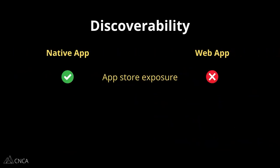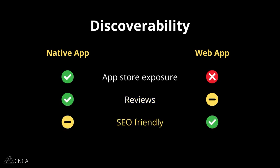Discoverability is also something you'll want to consider if you're not building an internal tool. Native apps have the major benefit of being listed in a formal store. Users can more easily find you by searching through the stores and reading reviews, so there's some built-in exposure. Web apps, on the other hand, need to rely on traditional marketing efforts, like SEO strategy. There's not necessarily a right or wrong here — think about where you'd expect your users to look for you to help steer you in a direction when considering discoverability.